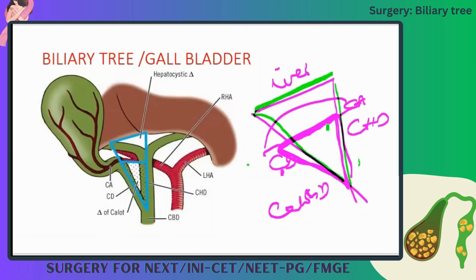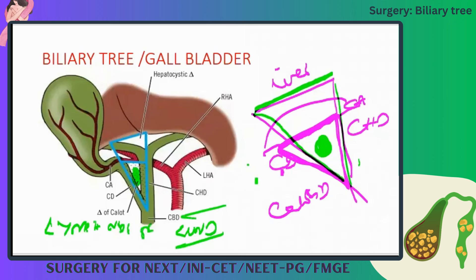Inside Calot's triangle there is a small lymph node — the lymph node of Lund (L-U-N-D). So to summarize: the constituent of the hepatocystic triangle is the cystic artery, and the constituent of Calot's triangle is the lymph node of Lund.